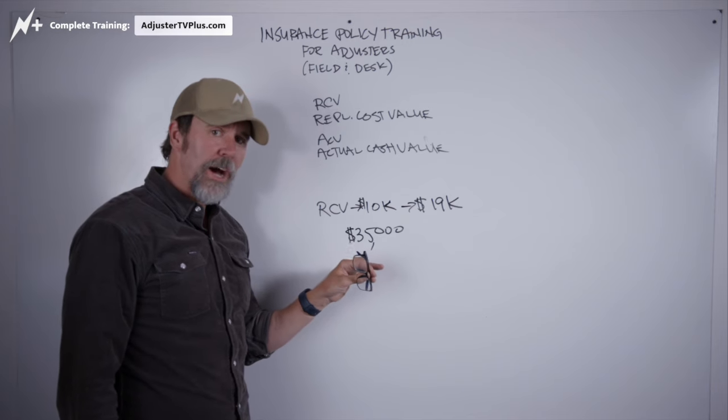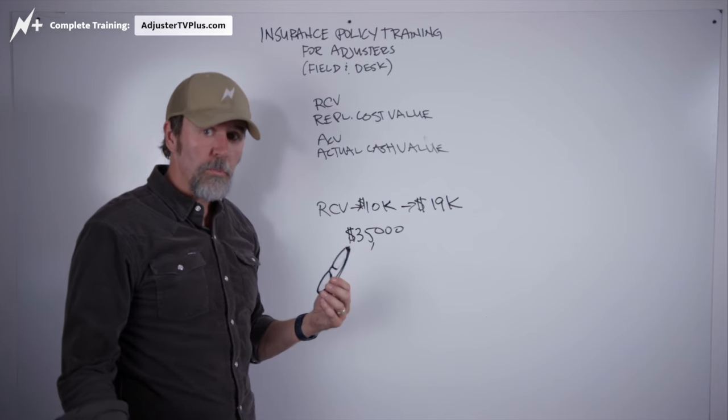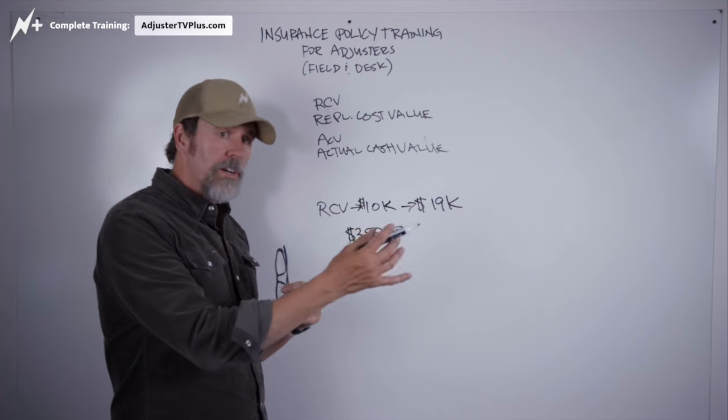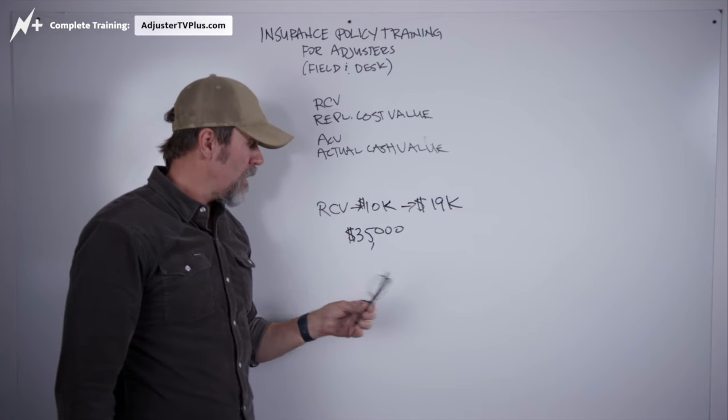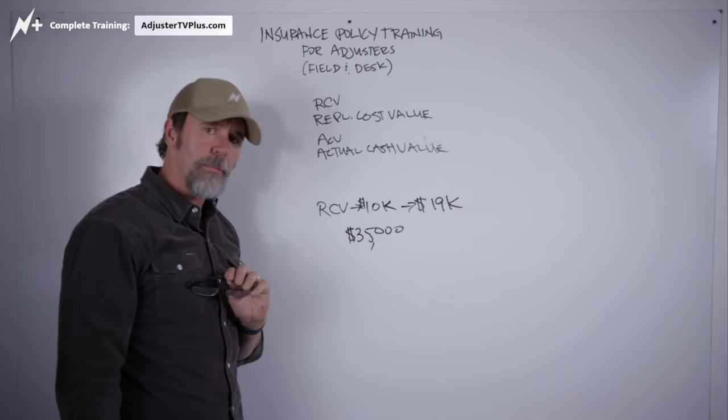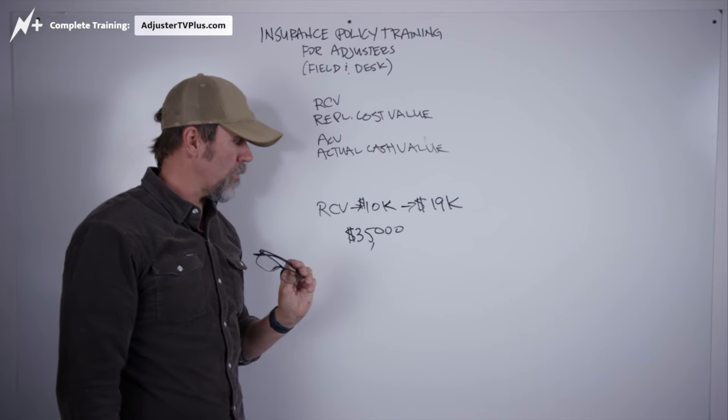The only thing that should come out of your pocket at any given time would be your deductible for $1,000, whatever it is, and that goes to the contractor. But unless something changes, you find more damage, whatever, this is what the grand total should be.